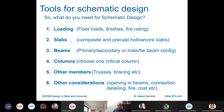We decide about beams — primary-secondary or main girder configuration. Fourth, we choose one critical column taking the most load. Fifth, we consider trusses and bracing. Sixth, other considerations like openings in beams, connection detailing, fire, and other factors. These are all decided in scheme design.